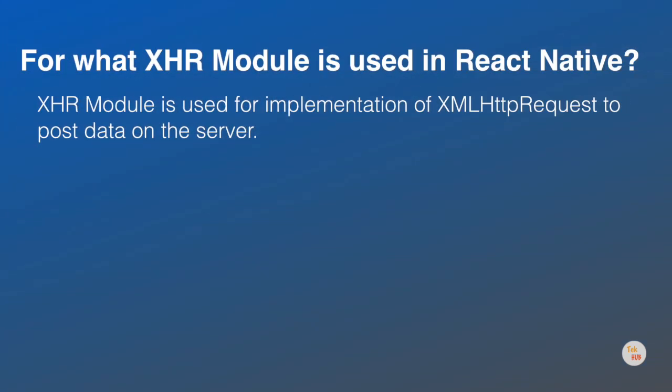Next question is: What is the XHR module used for in React Native? The XHR module is used for the implementation of XMLHttpRequest to post data on the server. The XMLHttpRequest API is built into React Native. This means you can use third-party libraries such as Frisbee or Axios that depend on it, or you can use the XMLHttpRequest API directly if you prefer. The security model for XMLHttpRequest is different than on web, as there is no concept of CORS in native apps.